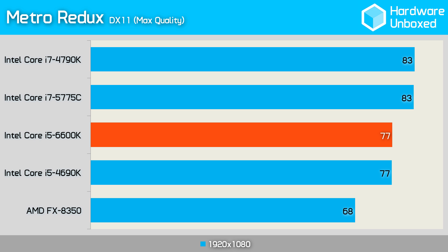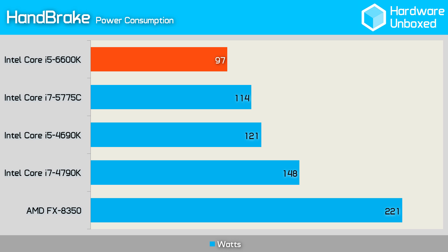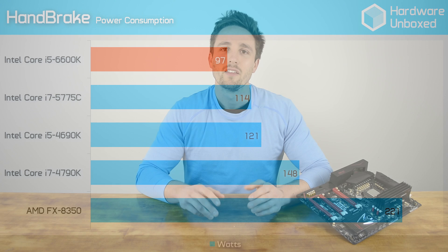The difference between Haswell and Skylake in gaming was non-existent. Our final test was power consumption with Handbrake, where the 6600K performed very well. It was significantly more efficient than its counterpart the 4690K, and used a lot less power than the i5s and i7s of previous generations.